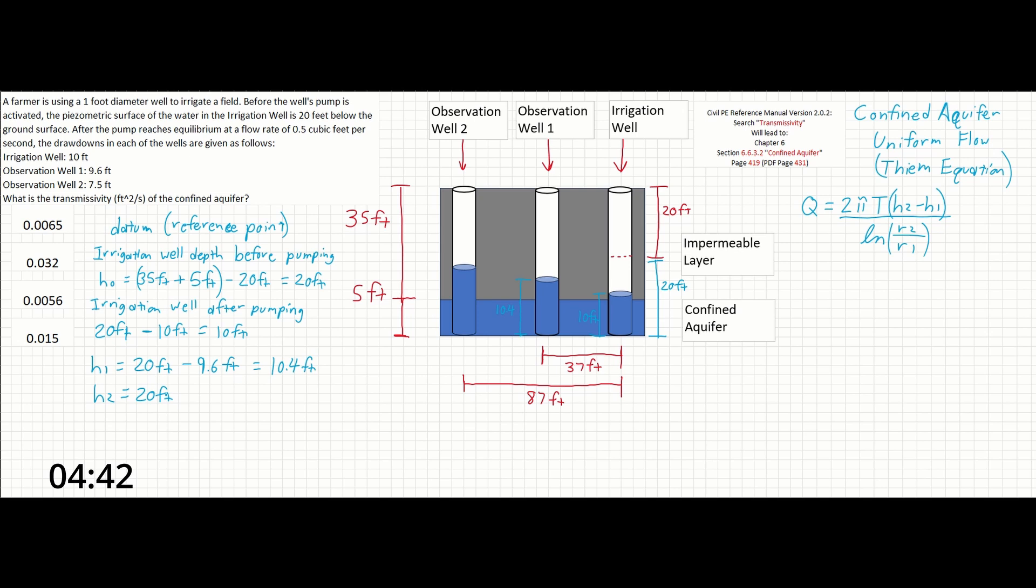Similarly, the height of the observation well 2, after pumping begins, is going to be the 20 foot reference point minus the 7.5 foot drawdown, giving us 12.5 feet. Once these values are found, we have all of the information we need to solve for transmissivity in the Thiem equation.